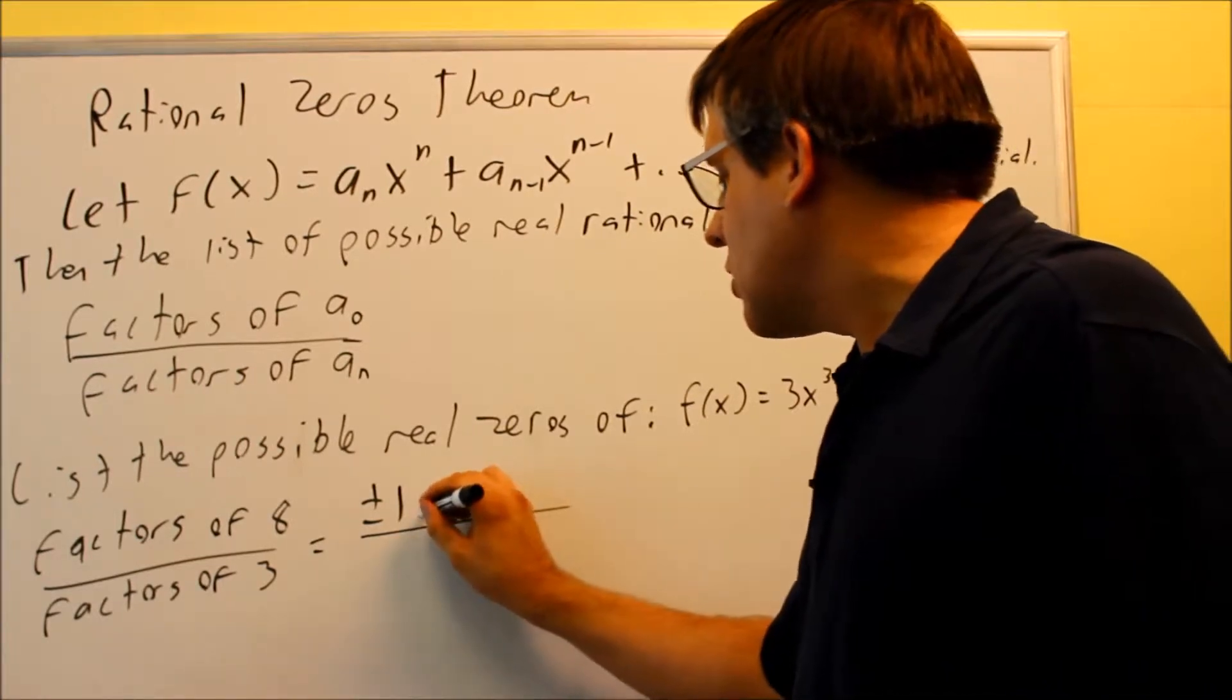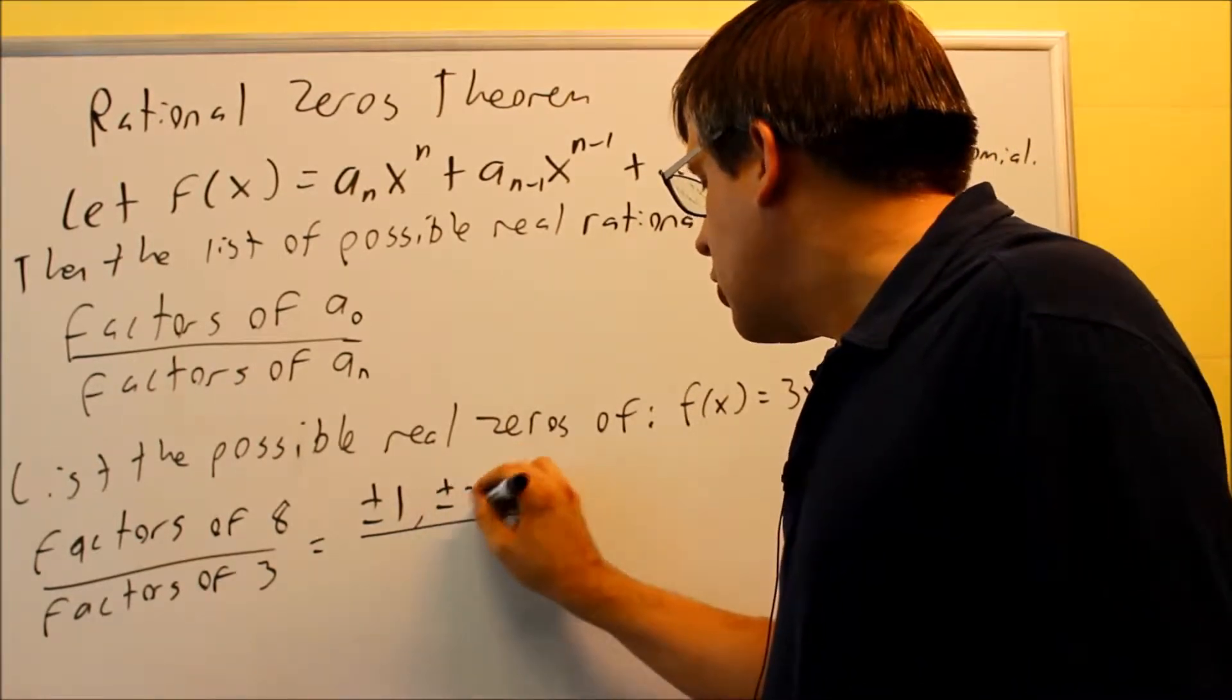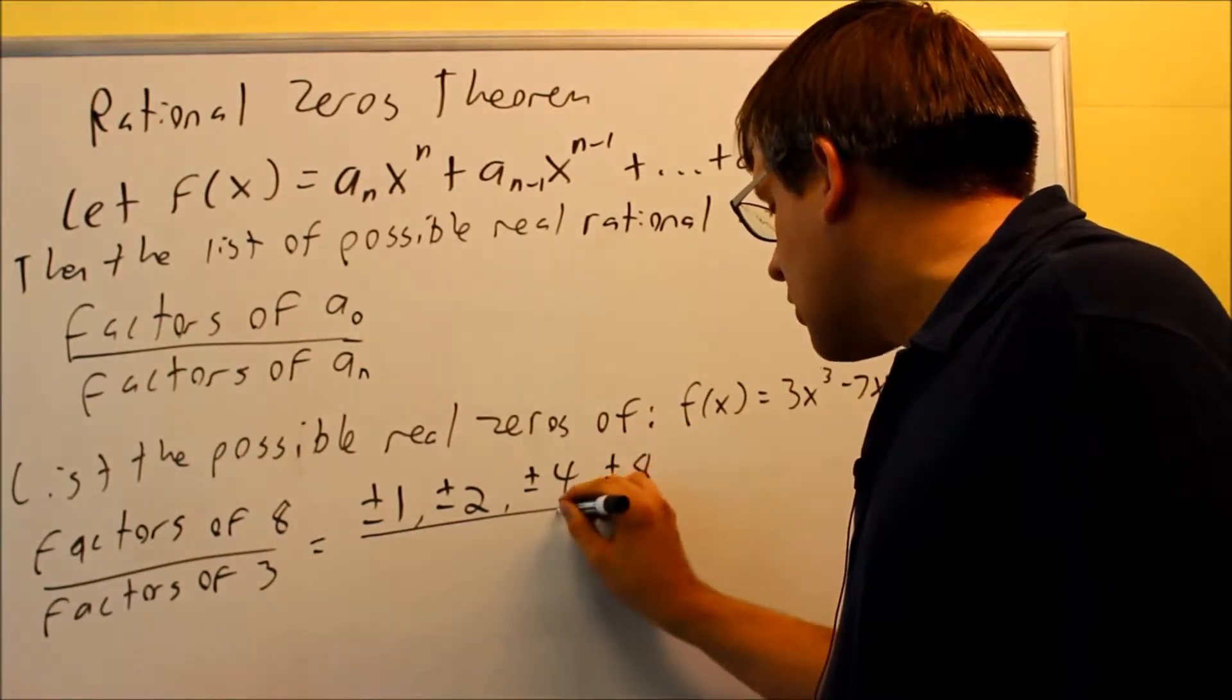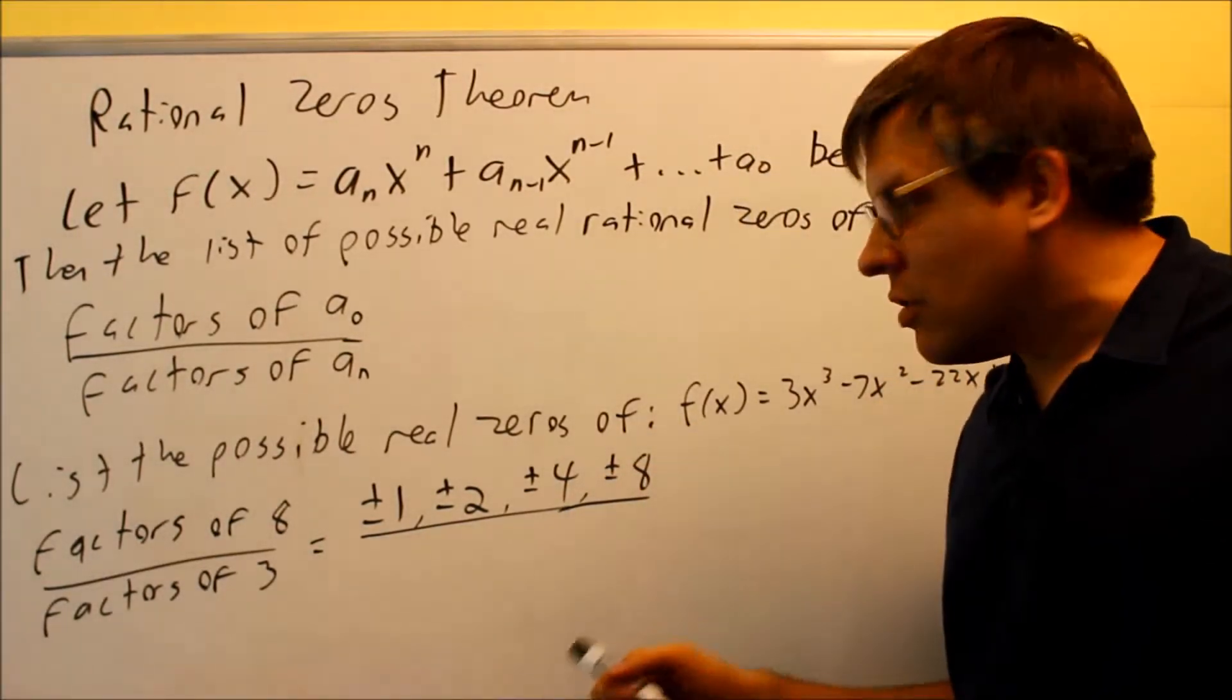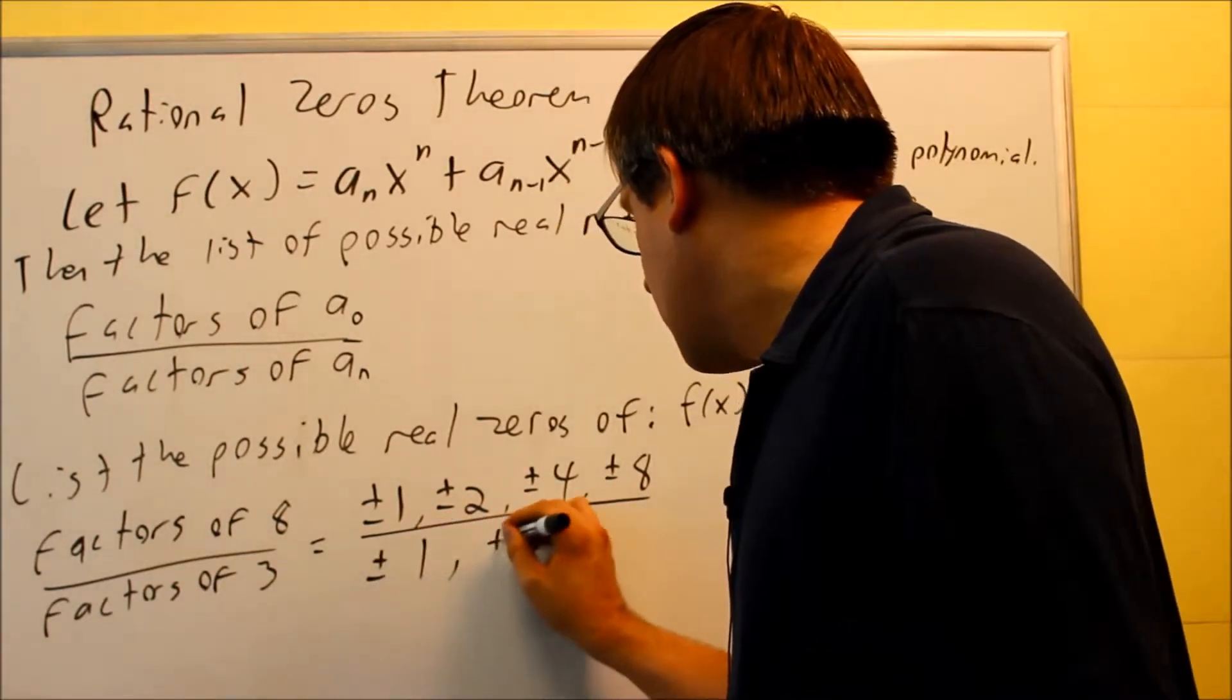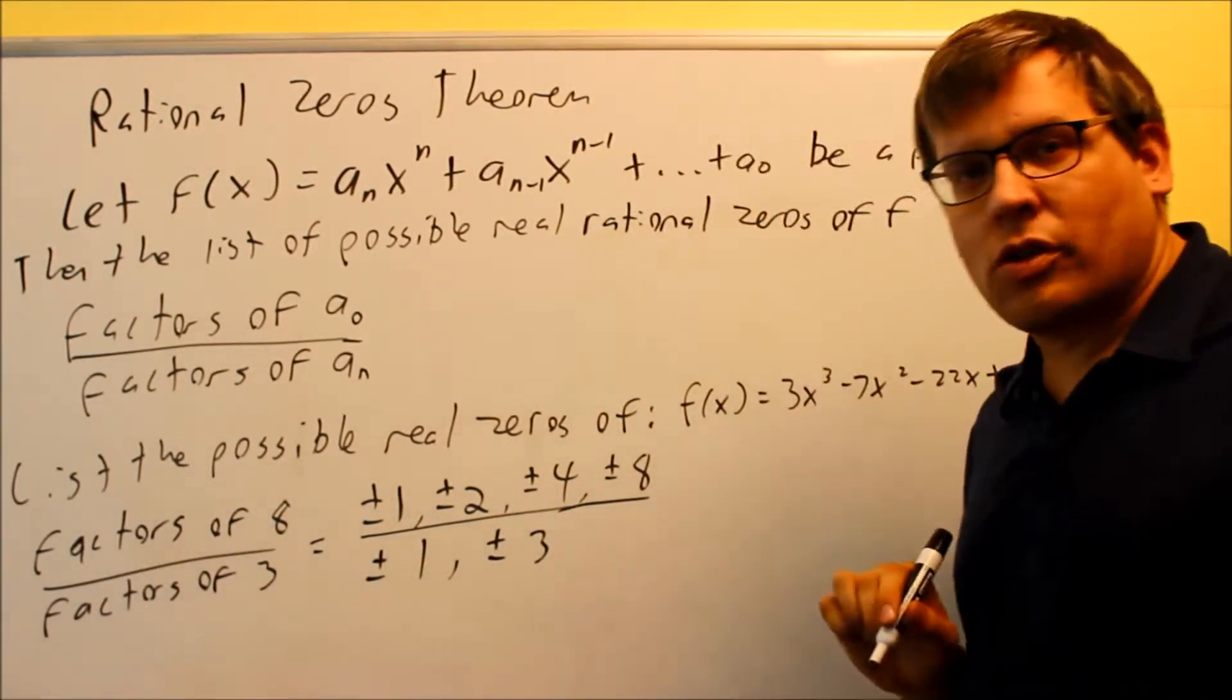Okay, now 1 divides evenly into 8. 2 divides evenly into 8. 4 and also 8. Those are the factors. Those are the numbers that divide evenly into 8. Then on the bottom, you're going to do factors of 3. Plus or minus 1, plus or minus 3. That's it. Those are the only factors of 3.